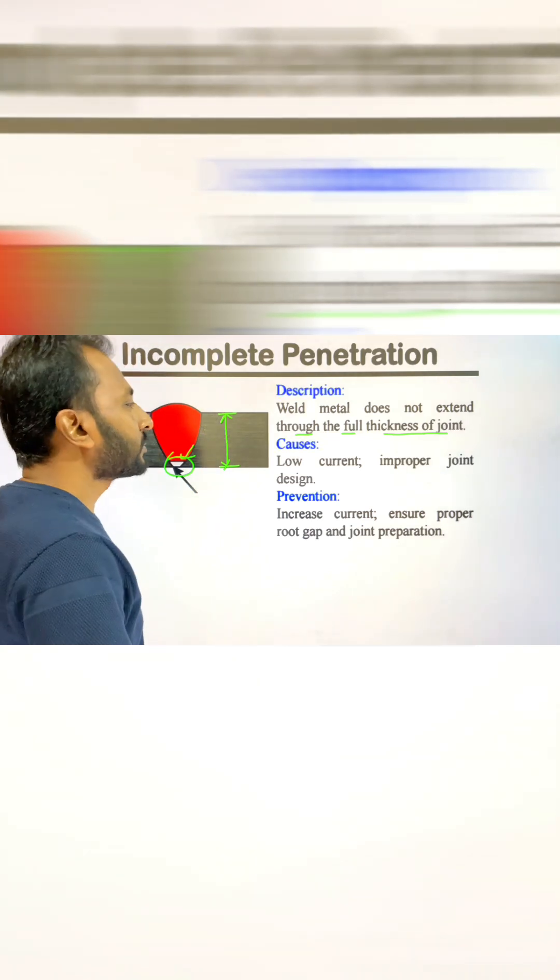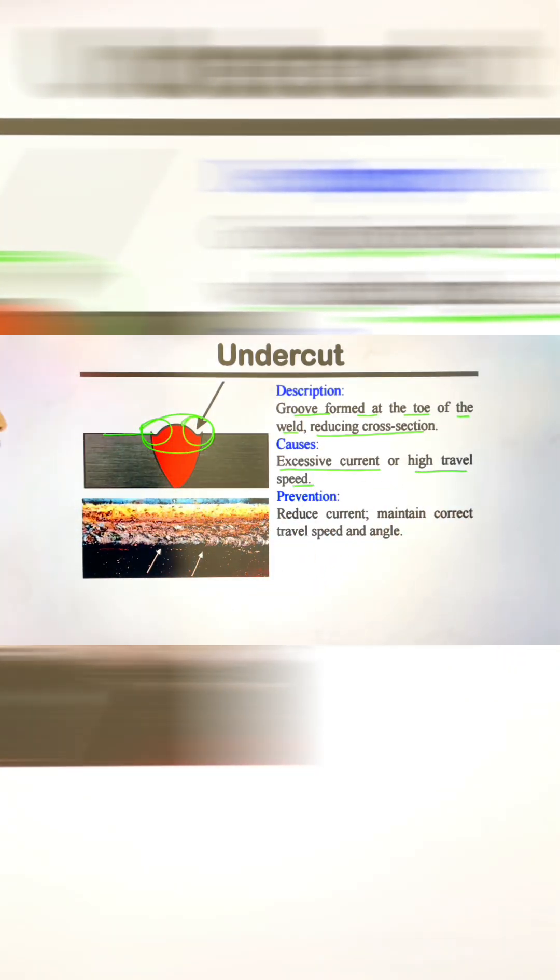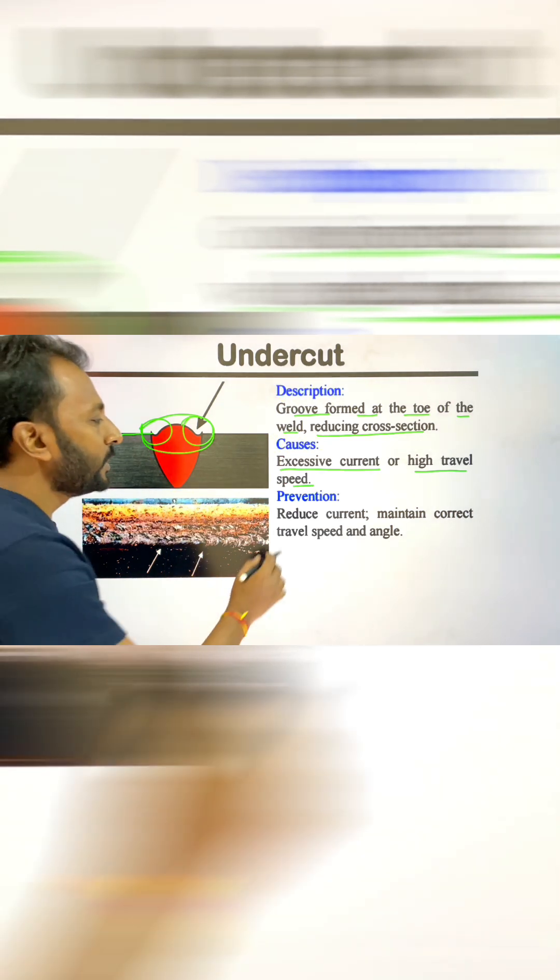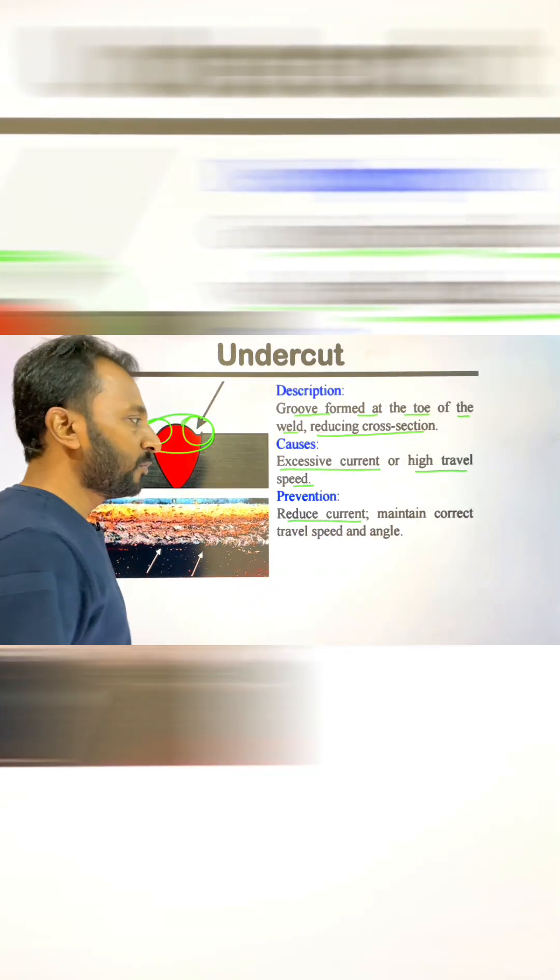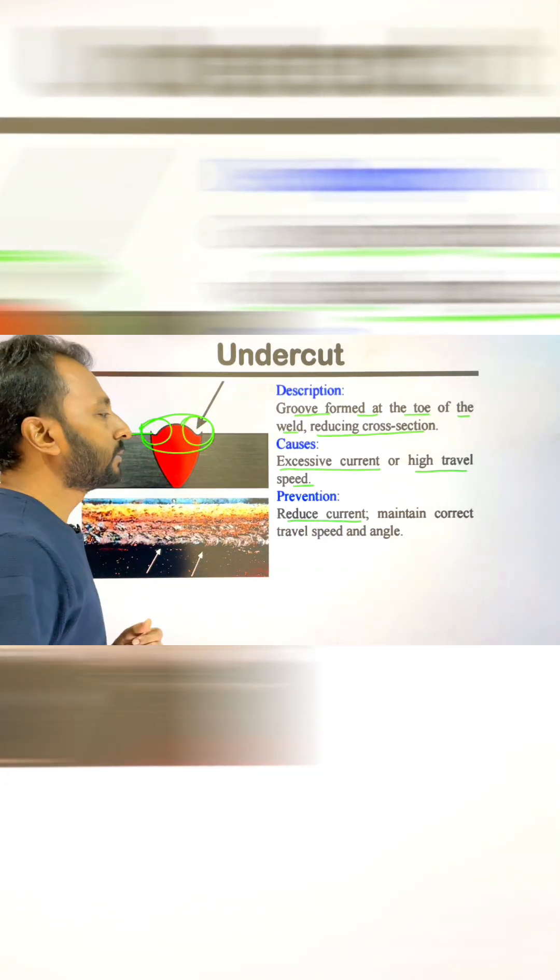Defects can be found at the toe of the weld when we use excessive current. If we use excessive current and the travel speed is high, then it can happen. How can we prevent it? We have to use the correct current and maintain proper welding parameters.